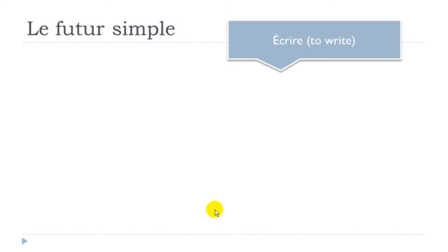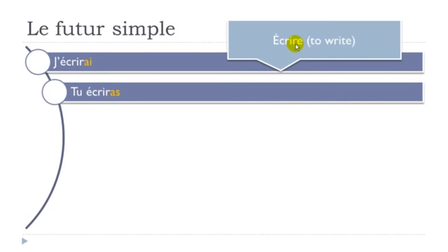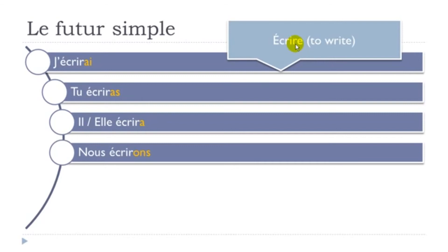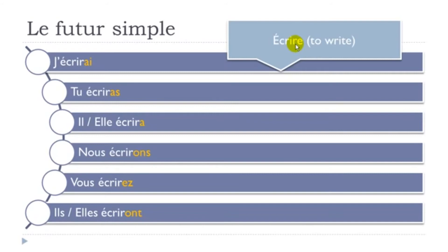Now 'écrire', to write — third group. As we saw with 'lire', we take away the final E, and with just the first part we add the endings: j'écrirai, tu écriras, il écrira, elle écrira, nous écrirons, vous écrirez, ils écriront, elles écriront. You take away the E, and then add: AI, A, A, ONS, EZ, ONT.